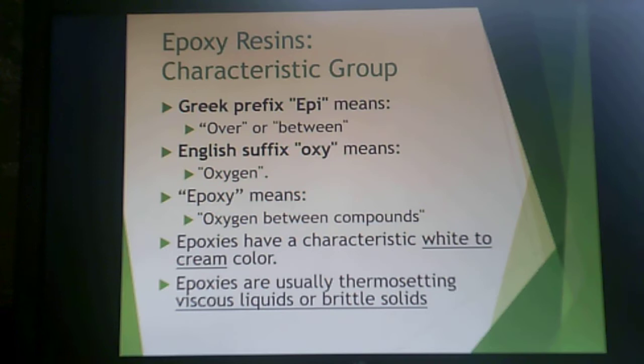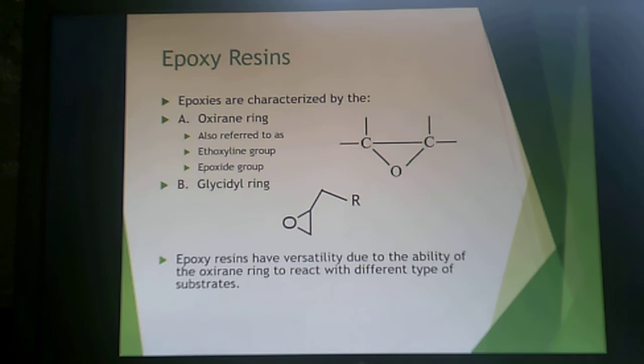The term 'epoxy' comes from two words: the Greek prefix 'epi,' meaning 'over' or 'between,' and the English suffix 'oxy,' meaning 'oxygen' — so epoxy means oxygen between compounds. Epoxies themselves have a characteristic white to cream color and are usually thermosetting viscous liquids or brittle solids in their unmodified form.